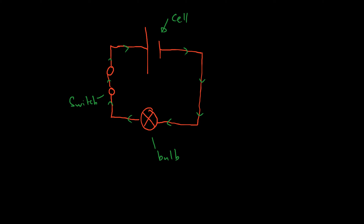So a series circuit means that everything is connected to the same wire. And when that happens there are a few rules. The current — remember the current is the flow of electrons — and if the electrons cannot choose where they go, so there's not more than one path for the electrons, that means the current throughout the whole circuit is constant.